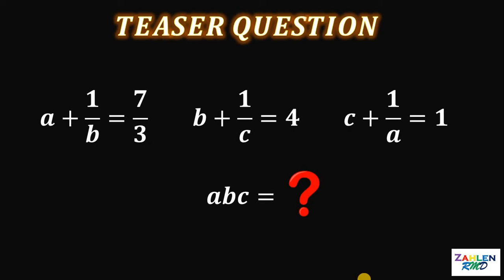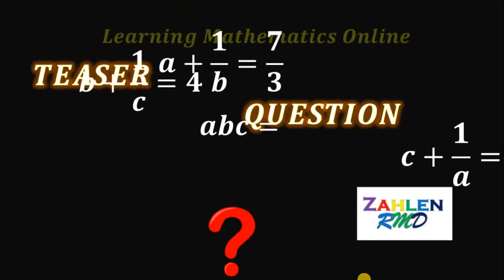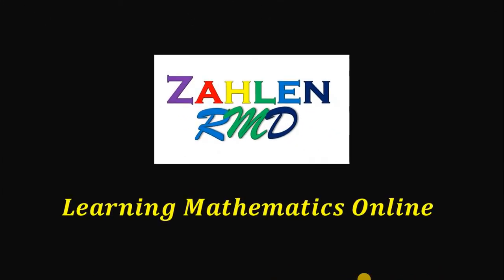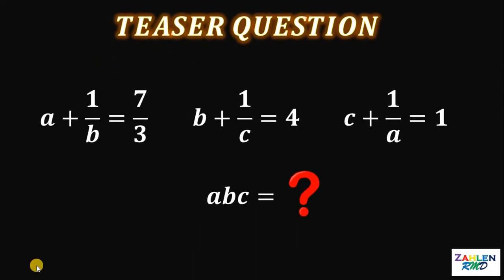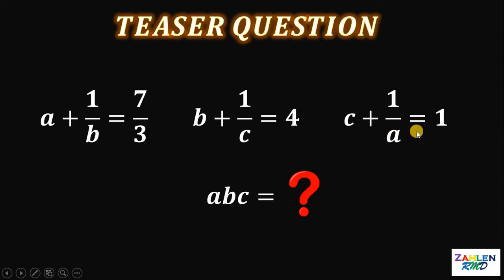Good day everyone, here's our math challenge for today. Given that A plus 1 over B equals 7 over 3, B plus 1 over C equals 4, and C plus 1 over A equals 1, our goal is to solve for the value of the product of A, B, and C.